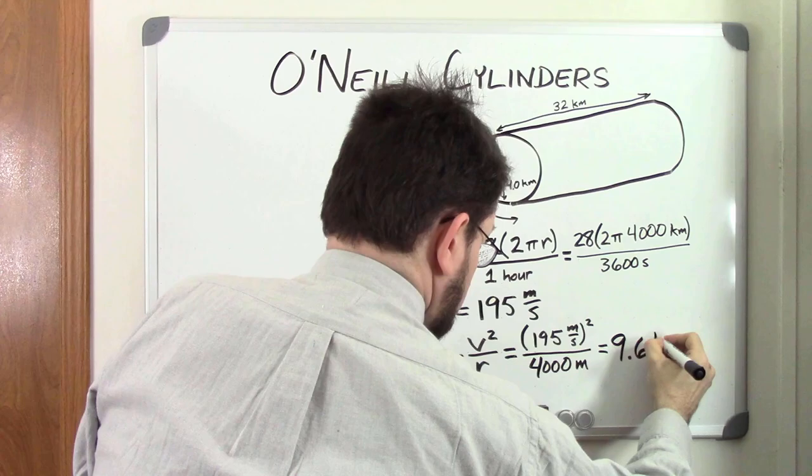The science fiction TV series Babylon 5 was set in an O'Neill Cylinder, though they never called it that in the show. The movie Interstellar also has an O'Neill Cylinder orbiting Saturn. It's called Cooper Station, and it looks beautiful.